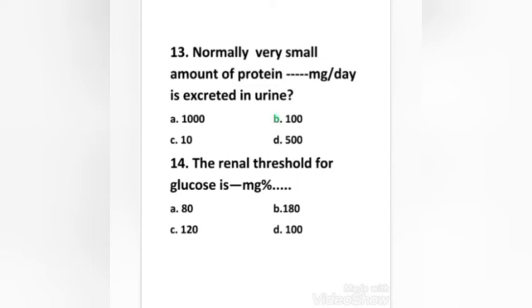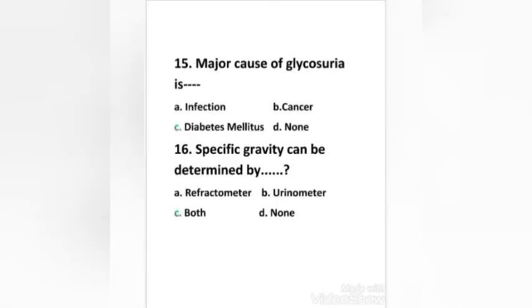The renal threshold for glucose is: 80 mg%, 180 mg%, 120 mg%, or 100 mg%. Right answer is option B, 180 mg percentage.